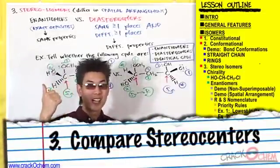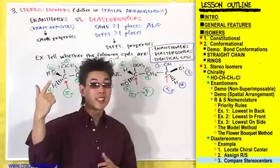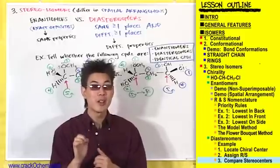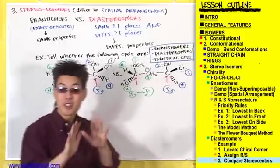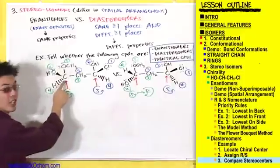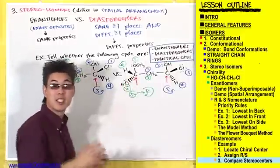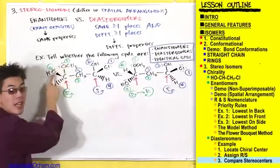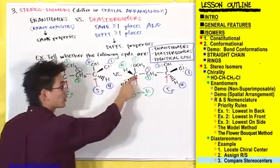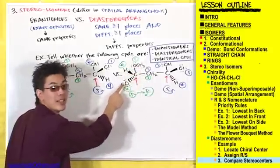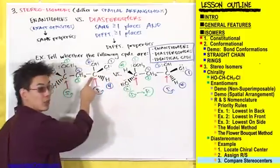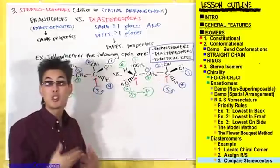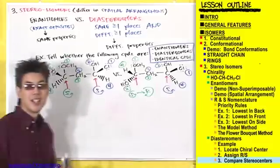We've identified the chiral centers and assigned R/S to each. Now let's compare them. When comparing, make sure you're comparing the corresponding stereocenters. For example, this stereocenter corresponds to this one because they're surrounded by the same atoms — this carbon is surrounded by an OCH3, OH, and H, just like the other carbon. The same goes for the other chiral center.